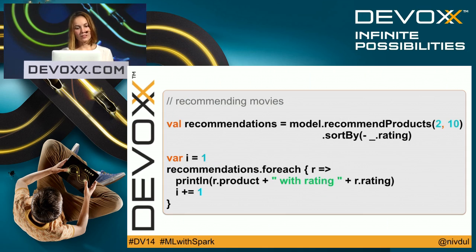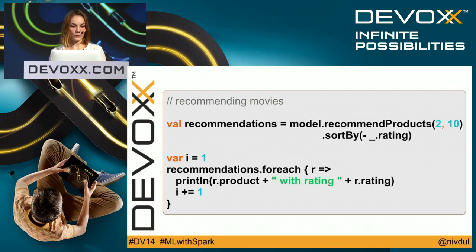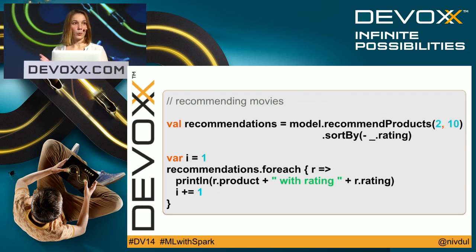To finish, I want my recommendations. I just call the recommendProducts method — here for user number two — and I want ten movies.